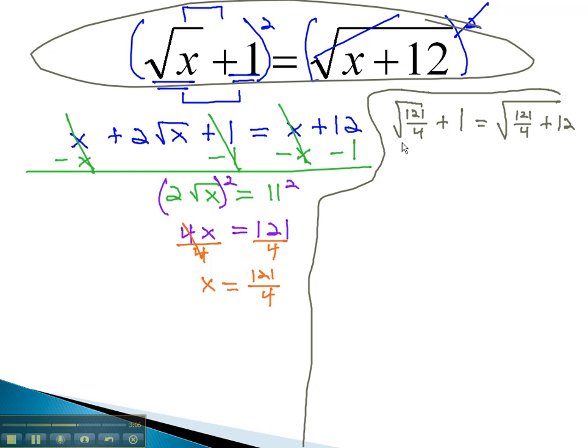Taking the square root of a fraction, we know we can take the square root of the numerator and the denominator. This gives us 11 halves plus 1. On the left side, adding 11 halves plus 1, getting a common denominator of 2 would give us 13 halves.